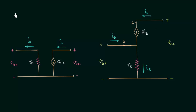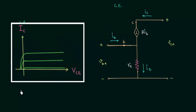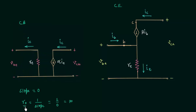In the last lecture we obtained the RE model for common base transistor and for common emitter transistor. In case of common base transistor, if you see the output characteristics, you will find the slope of the curve is nearly equal to zero, and we already know the output resistance is equal to one by slope. So we have one by zero, which is equal to infinity. Therefore, the output resistance is equal to infinity in case of common base transistor, and because of this we can neglect the output resistance in the RE model of common base transistor.